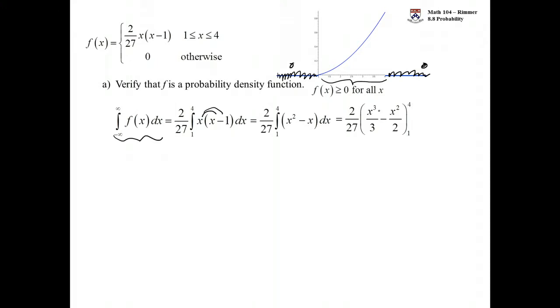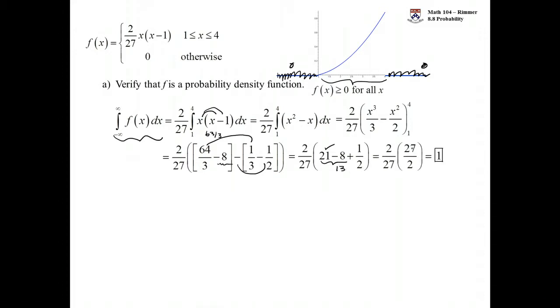We take the antiderivative: x cubed over three minus x squared over two. Put the four in, we get 64 over three minus 16 over two which is eight. Put the one in: one over three minus one over two. Then we evaluate this. Putting these two guys together, we get 63 over three, that reduces to 21, minus the eight, then plus the half. 21 minus eight is 13, 13 and a half is 27 over two, times 2 over 27, we get the total area is one. The two properties we need, total area one and always greater than or equal to zero, show us that this is a probability density function and can be used to measure probability.